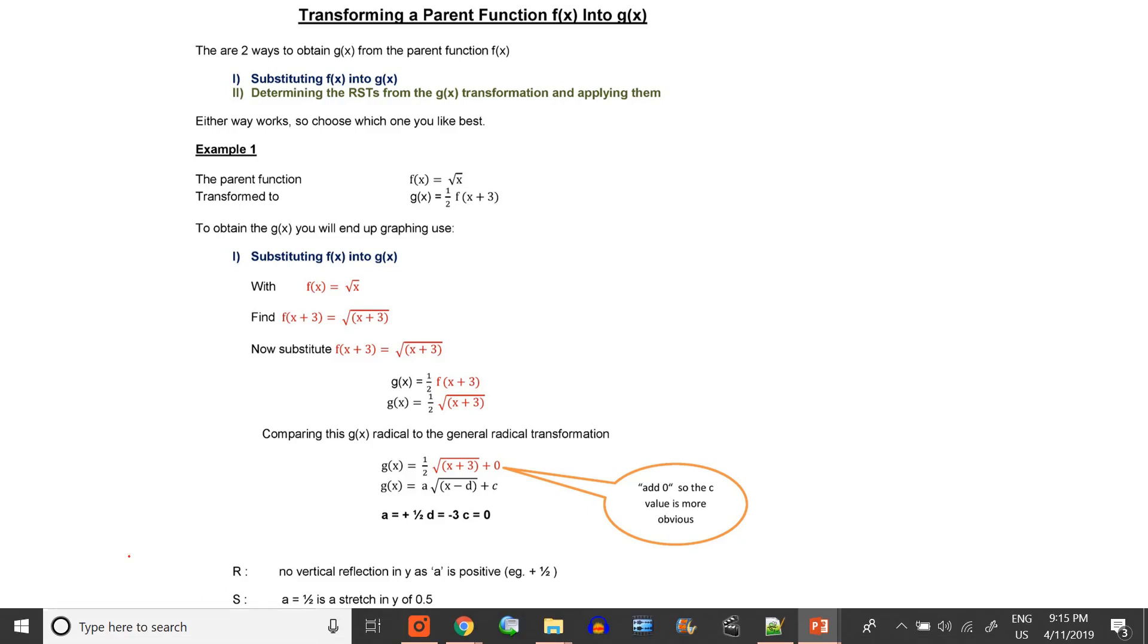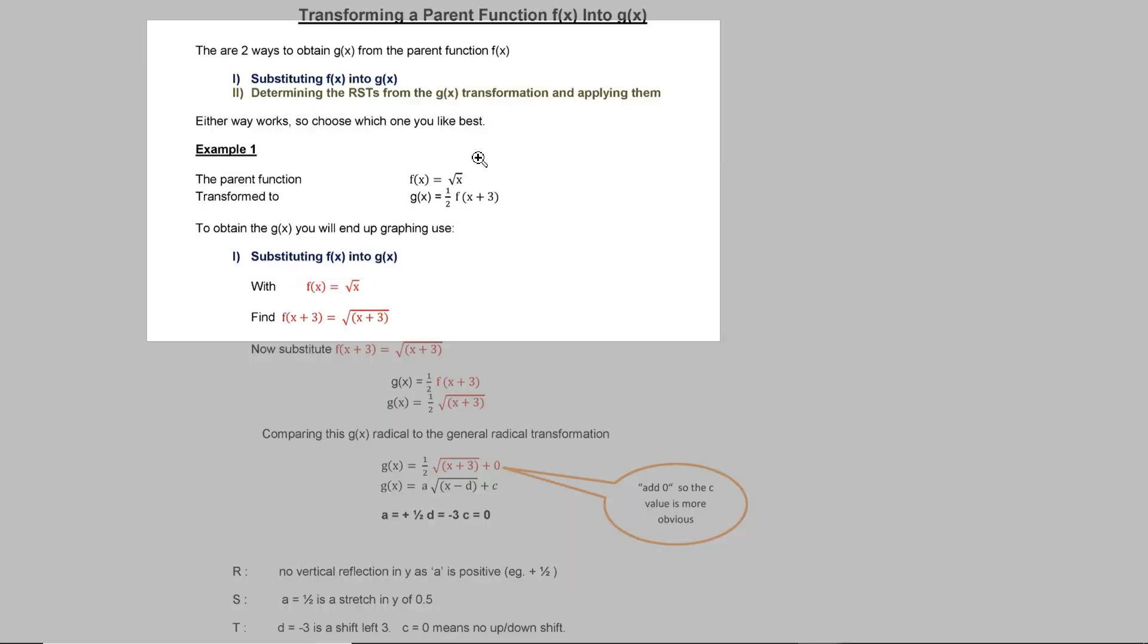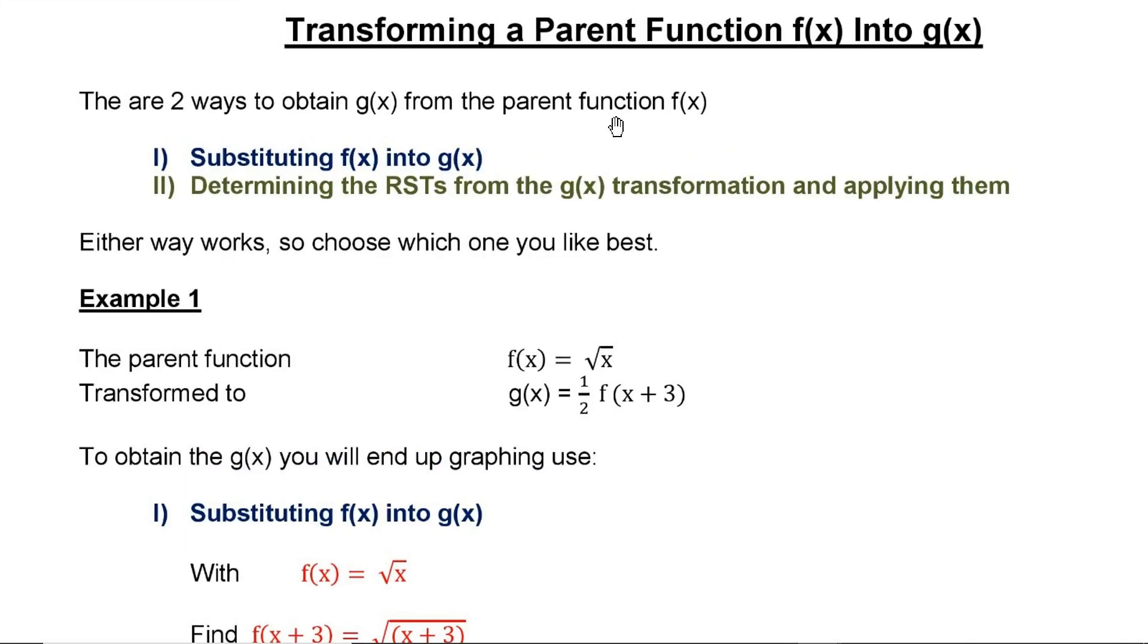If you want to transform a parent function f(x) into g(x) where RST is applied, there are two ways of obtaining g(x) from the parent function. You can substitute f(x) into g(x), then determine the RST from the g(x) transformation and apply them. Either way works.